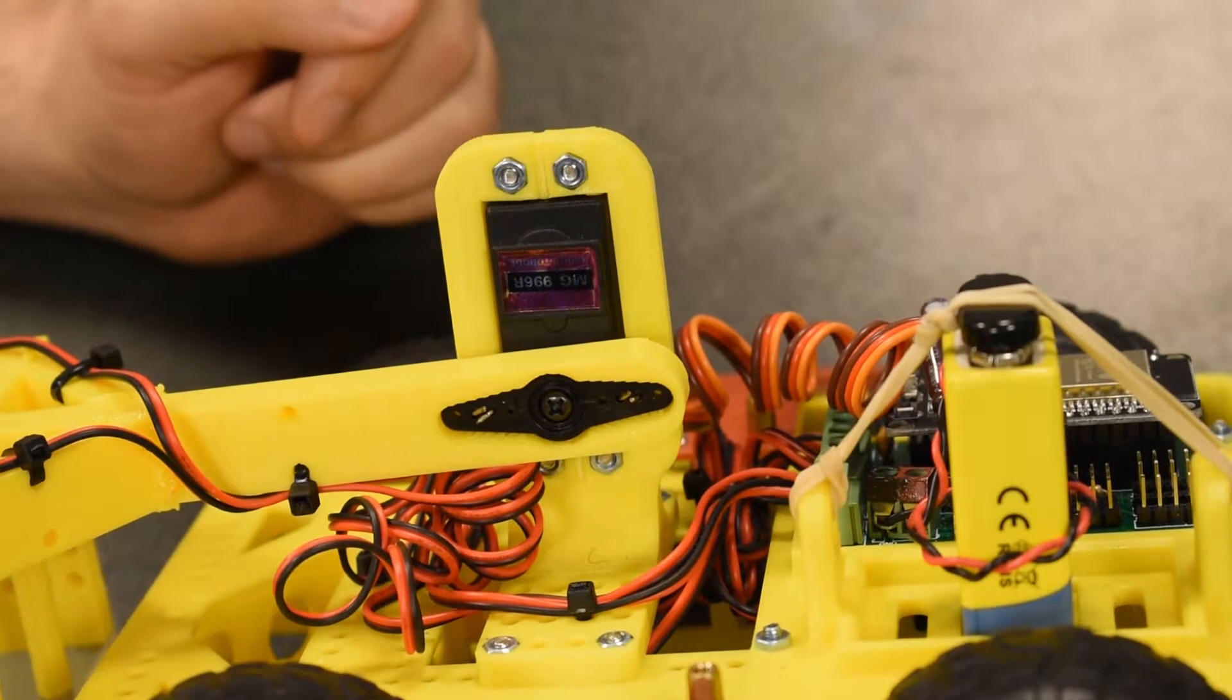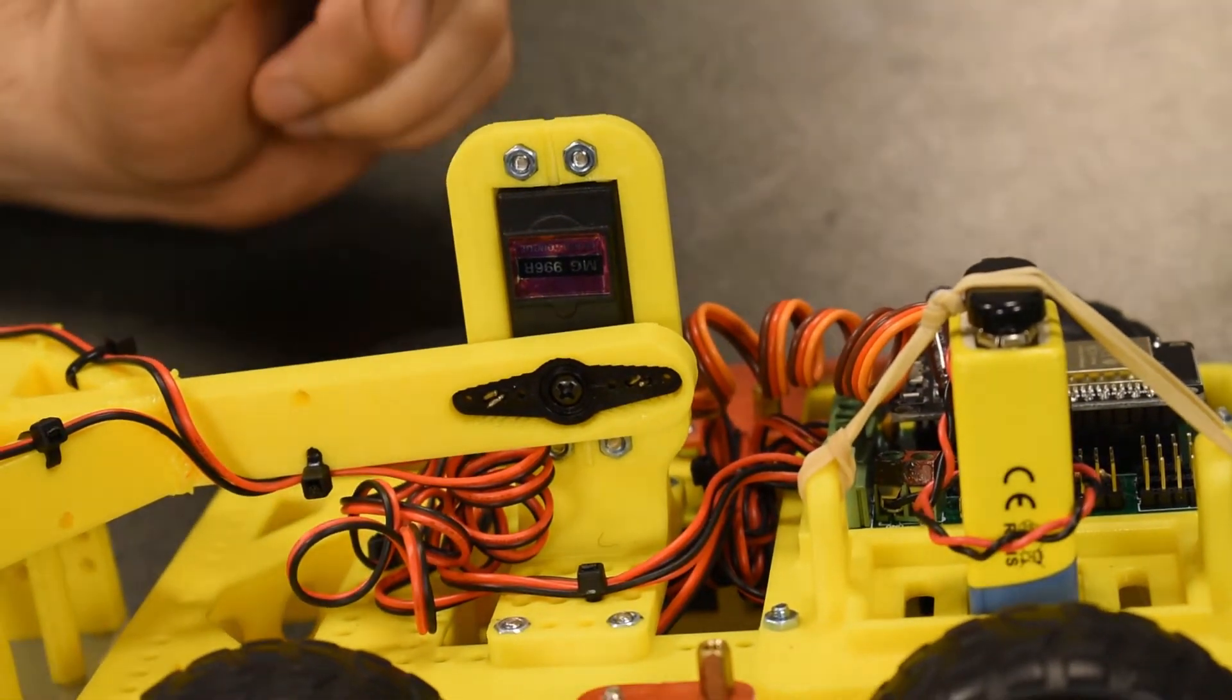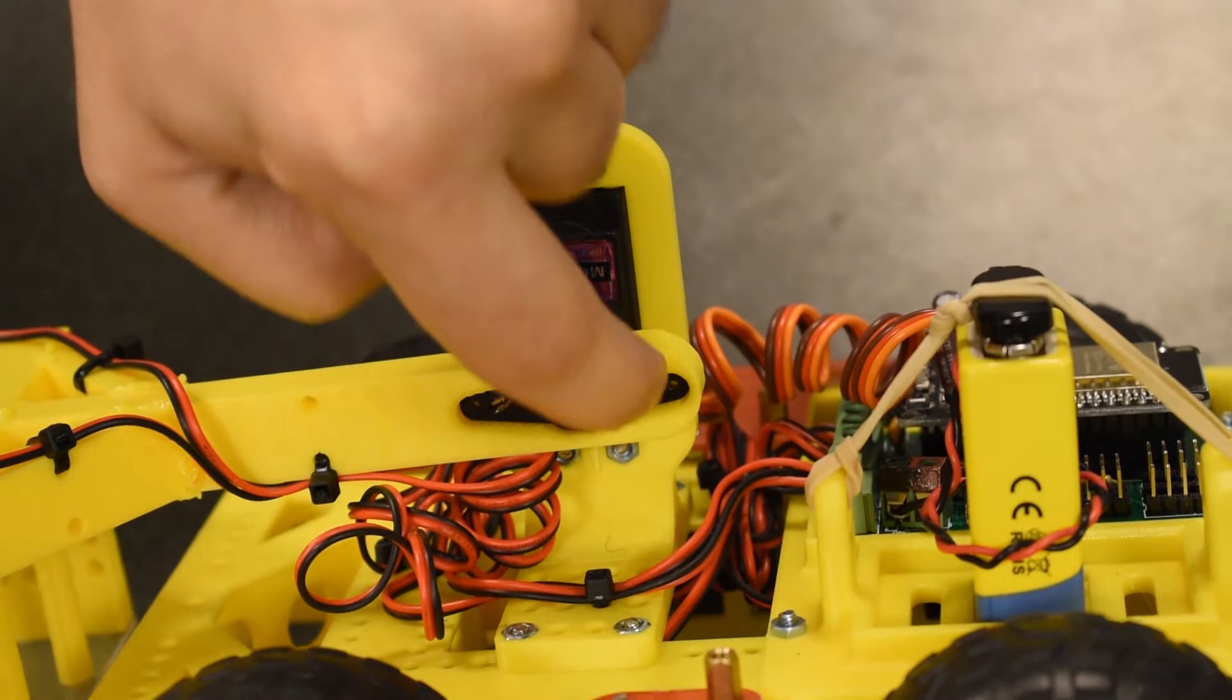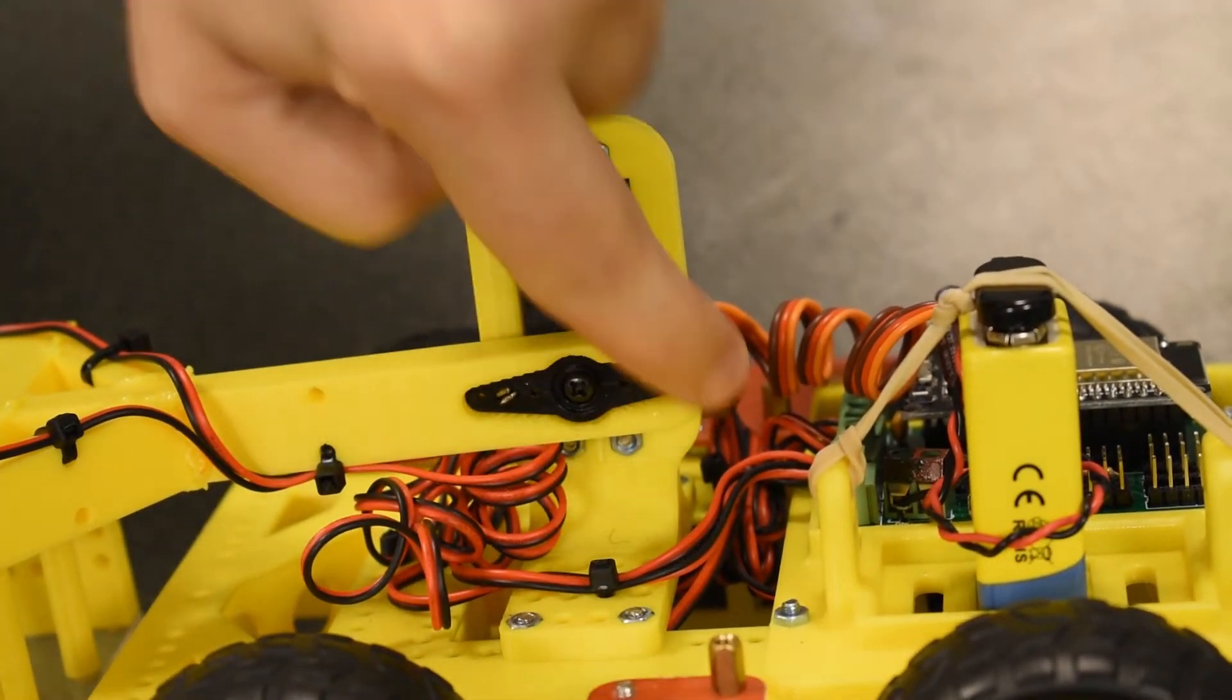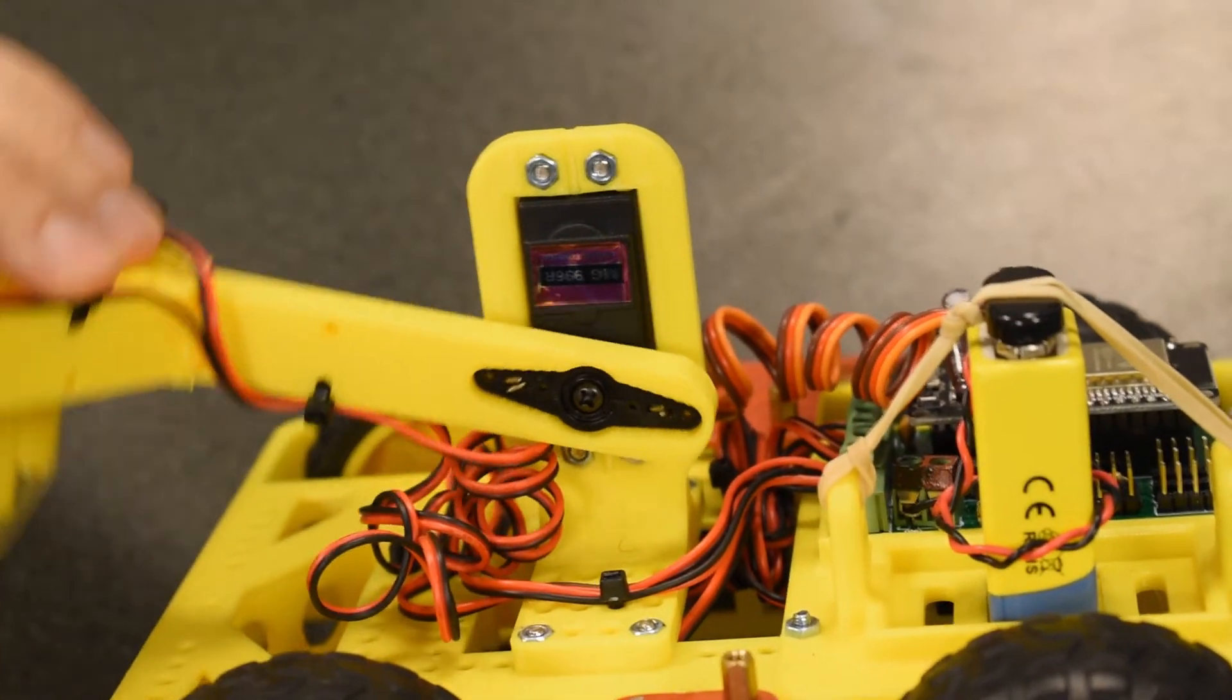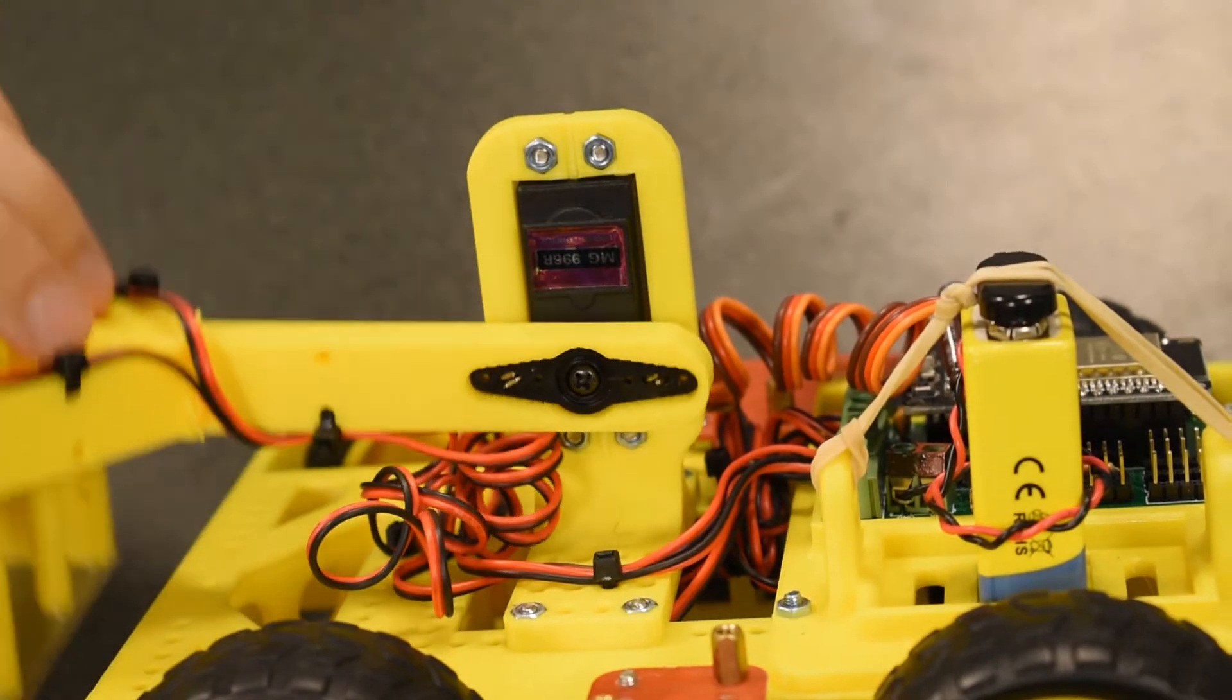The arm itself is actuated with one of these black, fairly generic servos. The servo horn is integrated into the 3D model of the arm so that the robot can control the arm up and down.